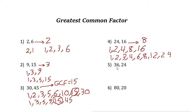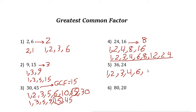For 24 and 36: we already have the factors of 24. The factors of 36 are 1, 2, 3, 4, 6, 9, 12, 18, and 36. Comparing the two lists, the biggest number they have in common is 12, so the GCF of 24 and 36 is 12.